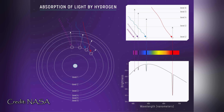Now let's have a look at the absorption spectrum of hydrogen. Within the visible light spectrum, hydrogen absorbs light with the following wavelengths: 410 nanometers, which is violet; 434 nanometers, which is blue; 486 nanometers, which is blue-green; and 656 nanometers, which is red.